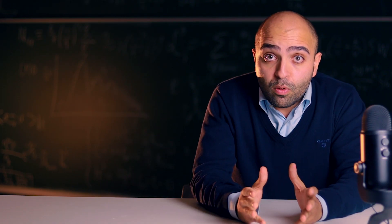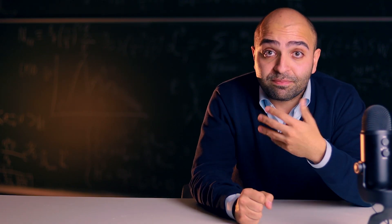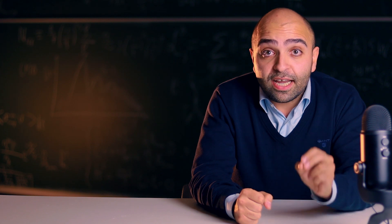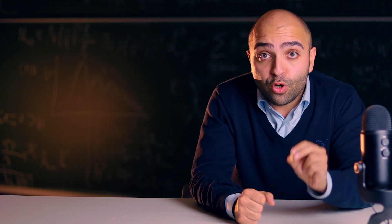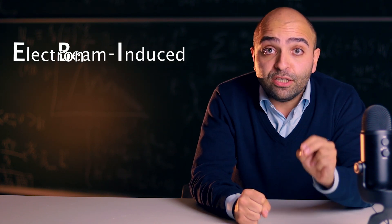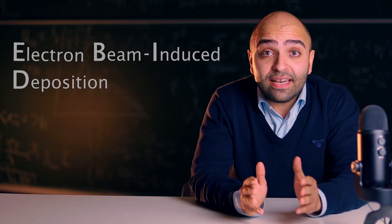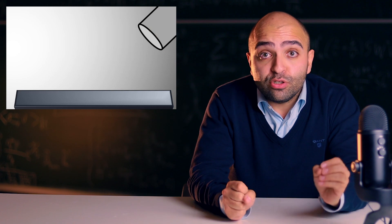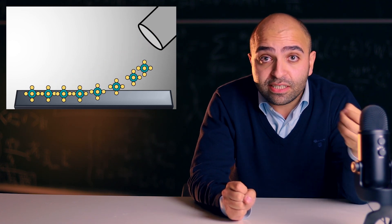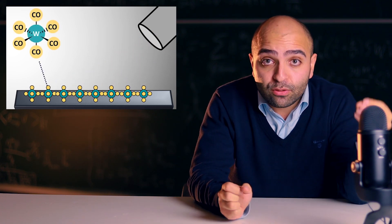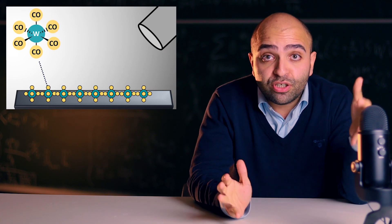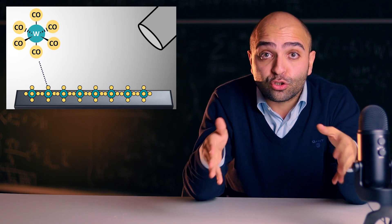What we wanted to do was to bypass all these practices using a direct write approach known as electron beam induced deposition or EBIT for short. The way that EBIT works is that you inject some form of a precursor molecule, usually a metal organic compound, into the chamber of a scanning electron microscope.